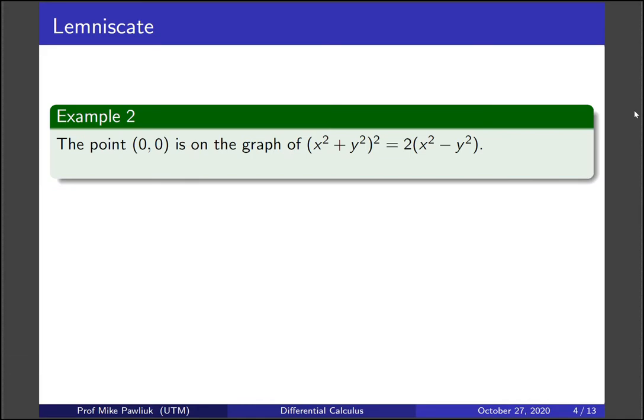So our first example is: the point (0,0) is on the graph of this equation, and we know this because if you plug in x = 0 and y = 0 you get an equality. So let's compute the left hand and right hand side and see that they're actually equal.